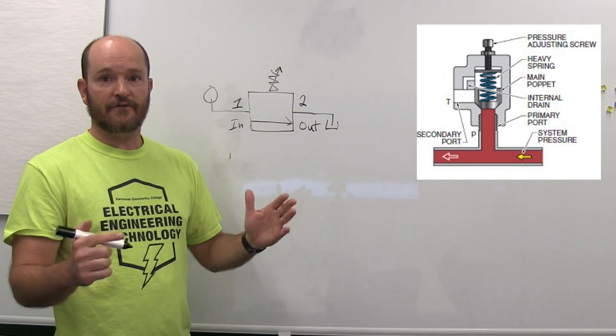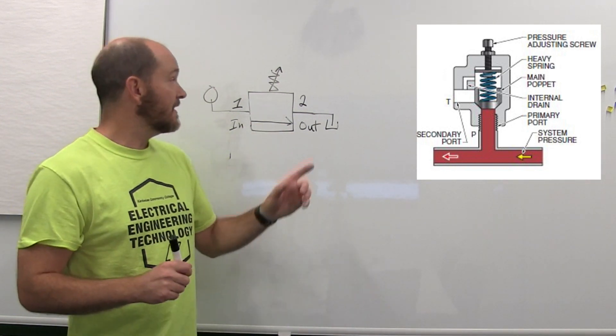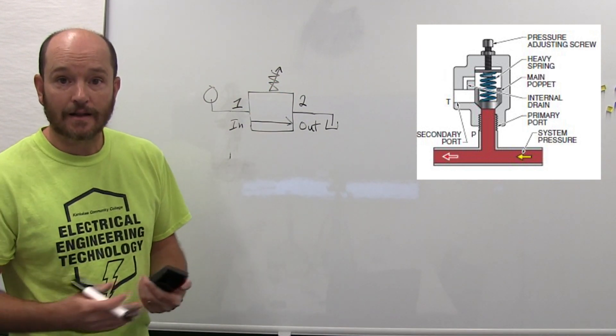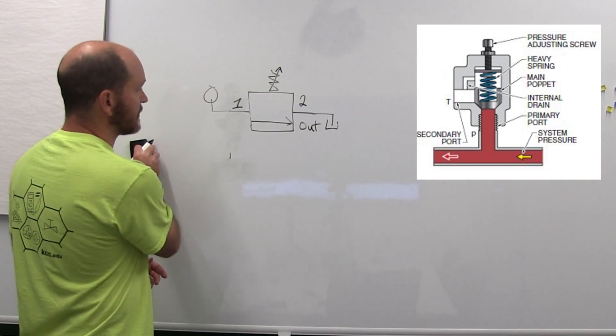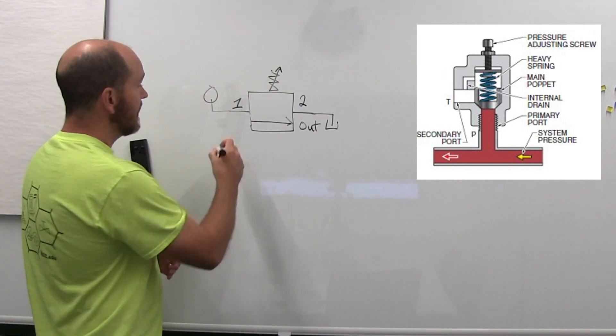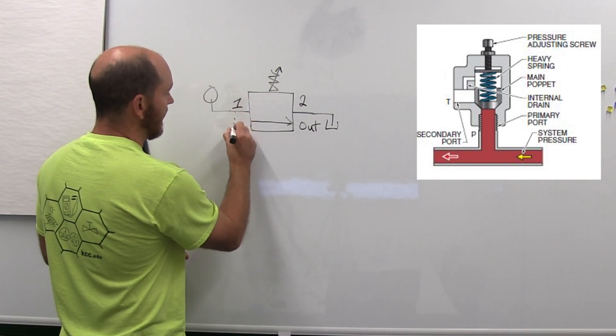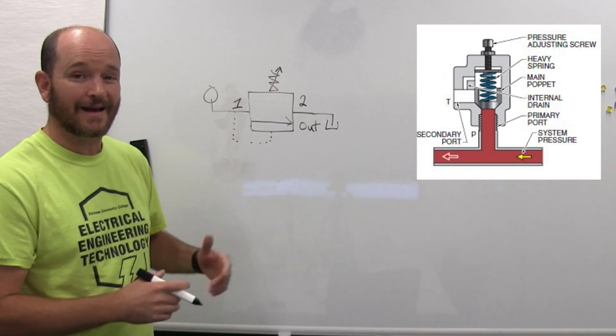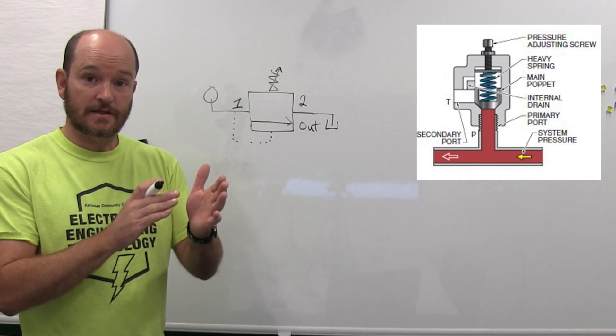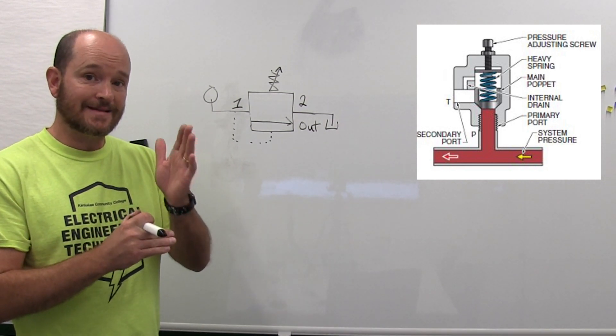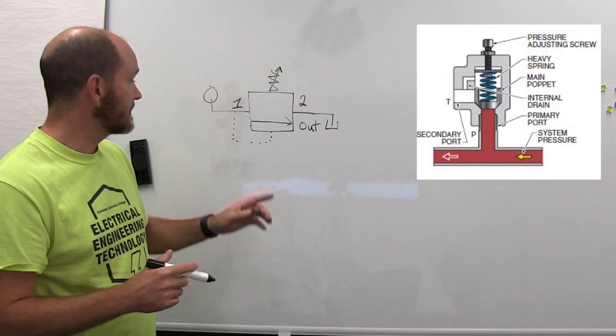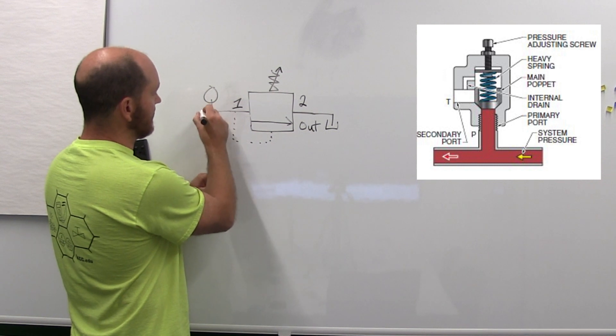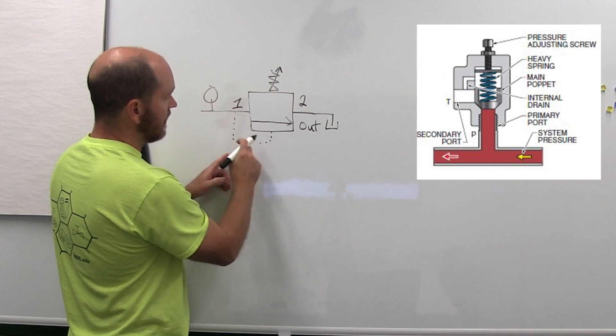This spring pressure is being compared to hydraulic pressure. How the hydraulic pressure gets there is through an internal pilot line that is drawn like this. Sometimes it's just being sensed right by the poppet itself. This line indicates that the hydraulic pressure that is located at one comes down through here.